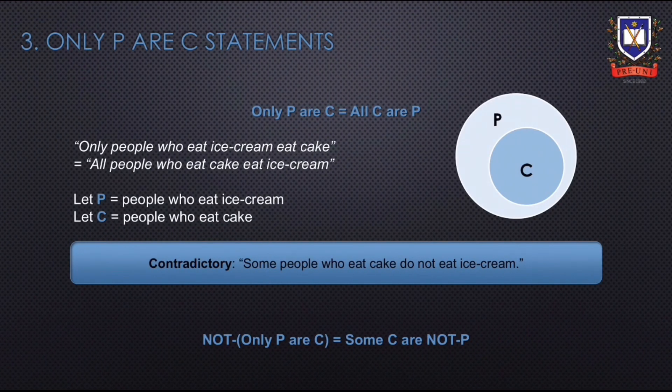Next, we'll talk about 'only P are C' statements. Saying only P are C is the same as saying all C are P. For example, saying only people who eat ice cream eat cake is the same as saying all people who eat cake eat ice cream. The Venn diagram shows this relationship where P represents people who eat ice cream and C represents people who eat cake. The contradictory of this statement is 'some people who eat cake do not eat ice cream.'